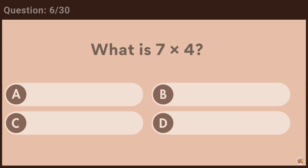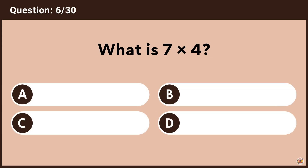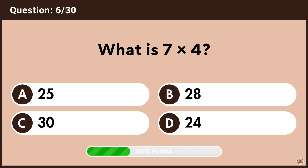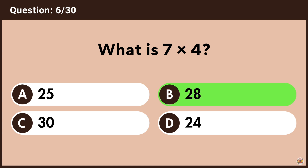What is 7 multiplied by 4? Answer B, 28.